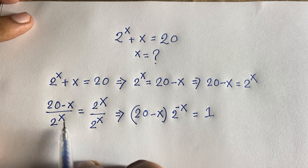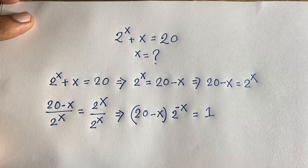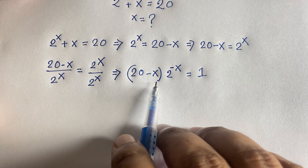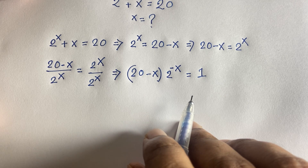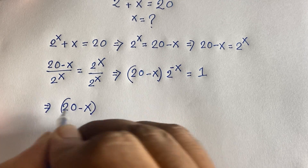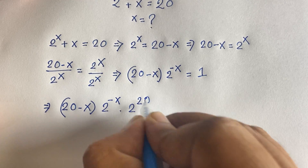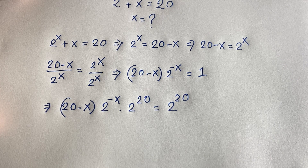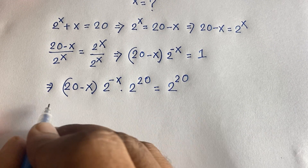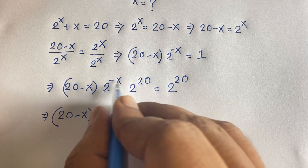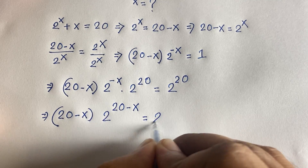We know that 1 over 2^n equals 2 to the power minus n, so using that inverse rule, we have (20 minus x) times 2 to the power minus x equals 1. Now I multiply both sides by 2 to the power 20 — I do this because we need to use the Lambert W function. This gives us (20 minus x) times 2 to the power minus x times 2 to the power 20 equals 2 to the power 20. Adding the exponents on the left, we get (20 minus x) times 2 to the power (20 minus x) equals 2 to the power 20.